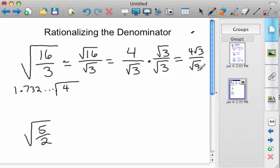So the rationalized root is 4 root 3 divided by 3 now, because root 9 is a perfect square, which is 3.